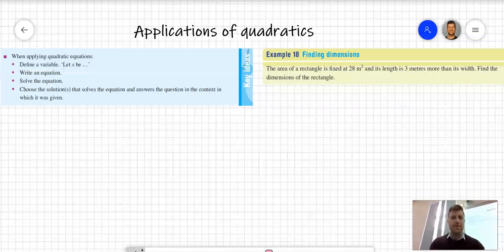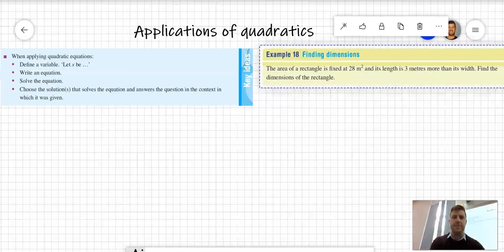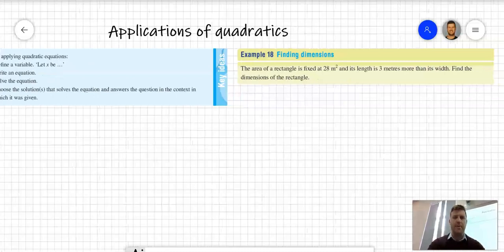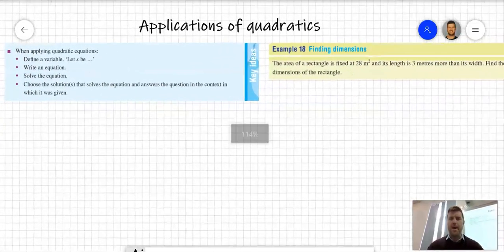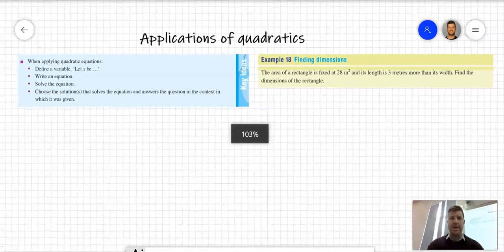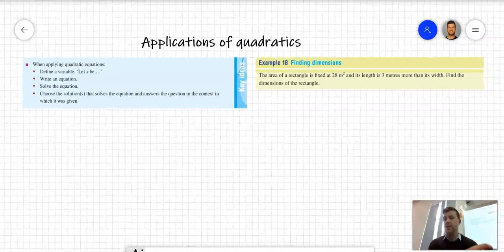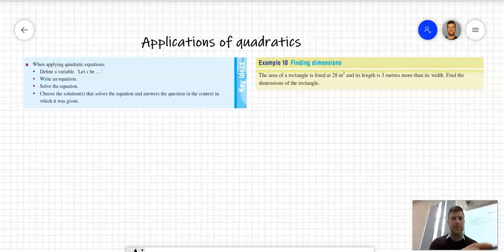From the textbook, I've taken the key ideas section, which provides steps to follow when solving application questions. First, define the variable - let x be something. We refer back to what the question is, so x may be the length of a rectangle, someone's age, or whatever is relevant to the question.